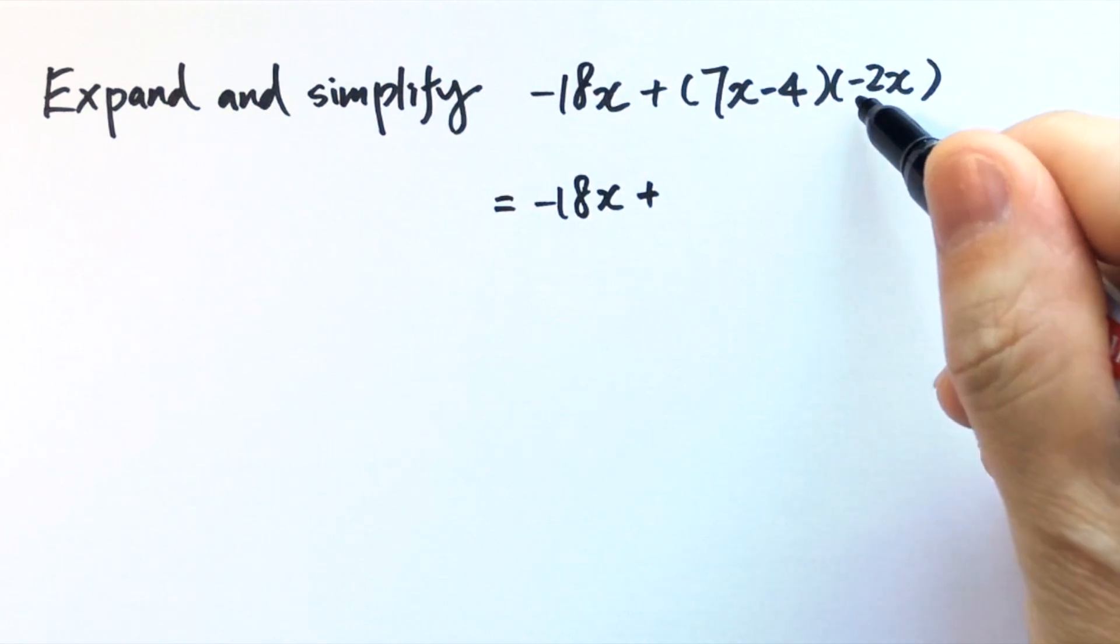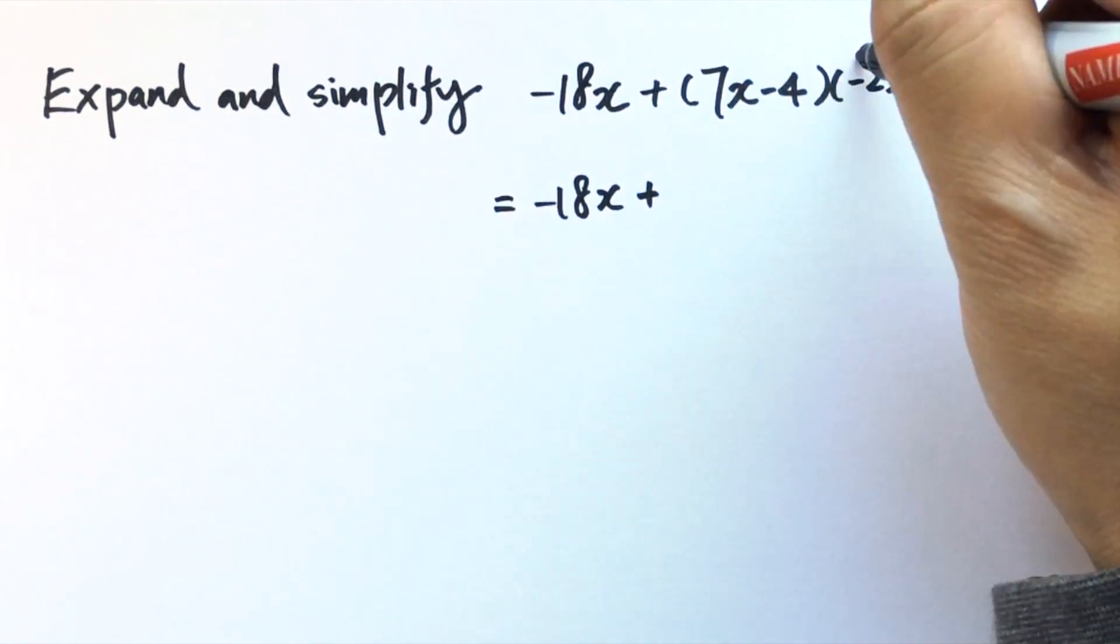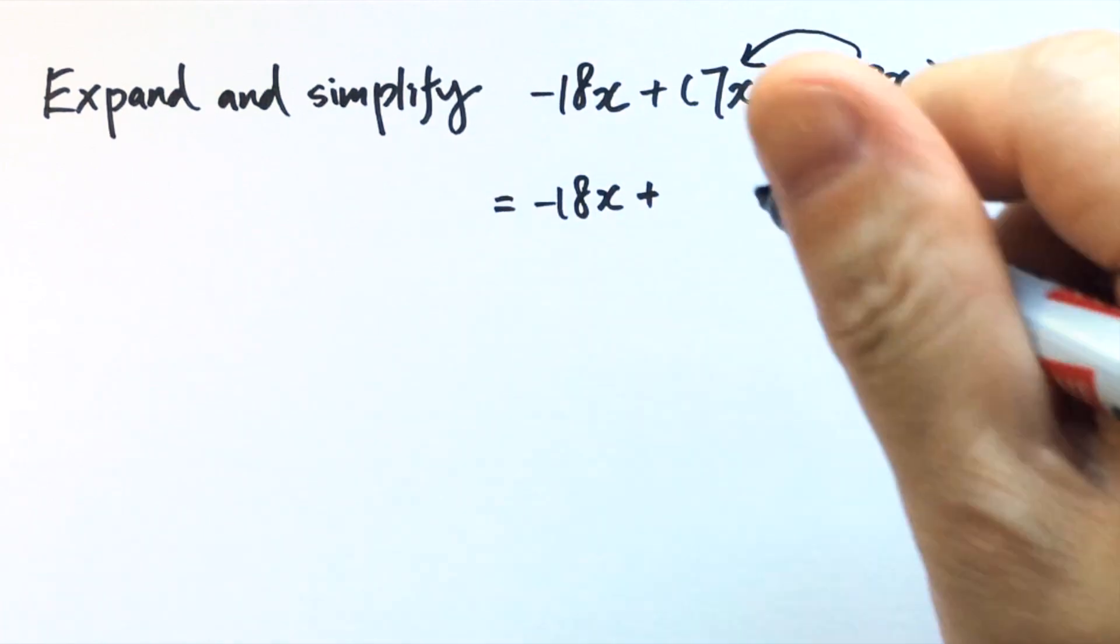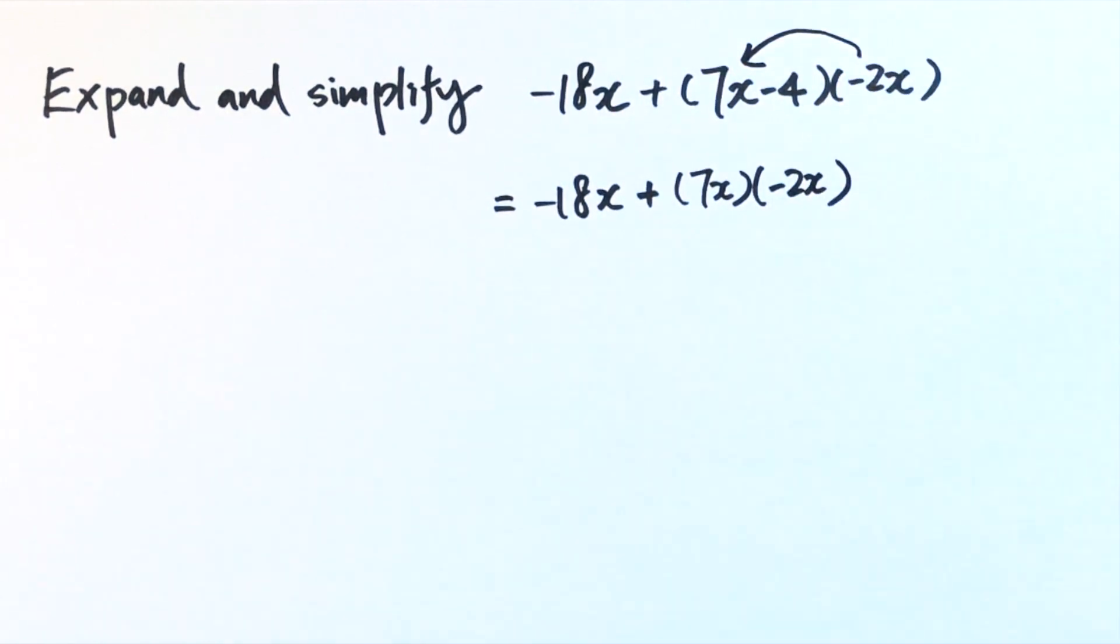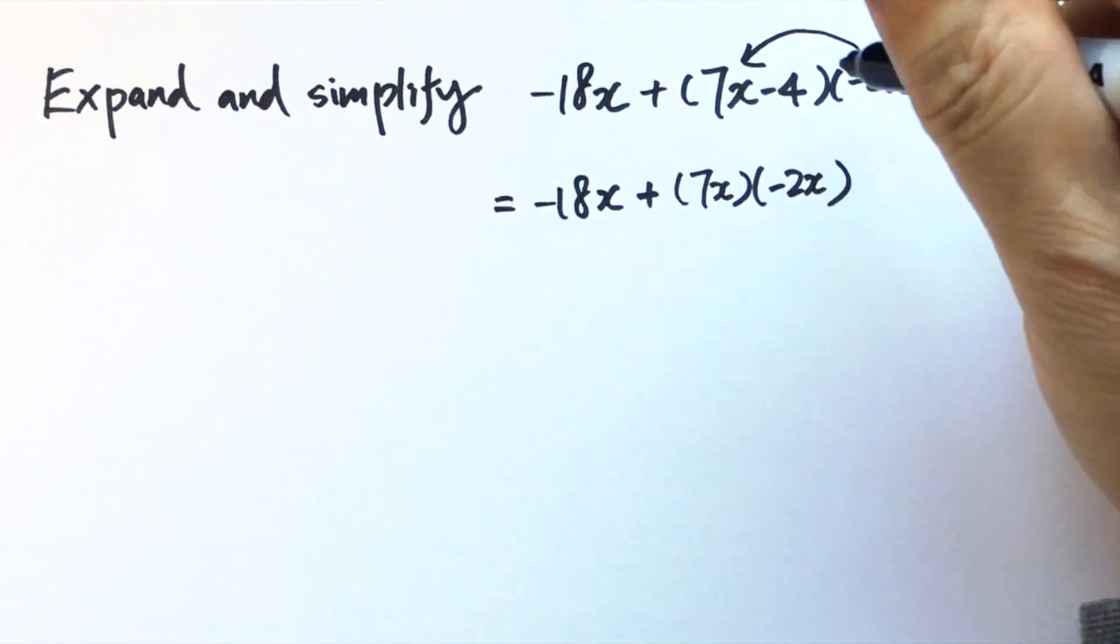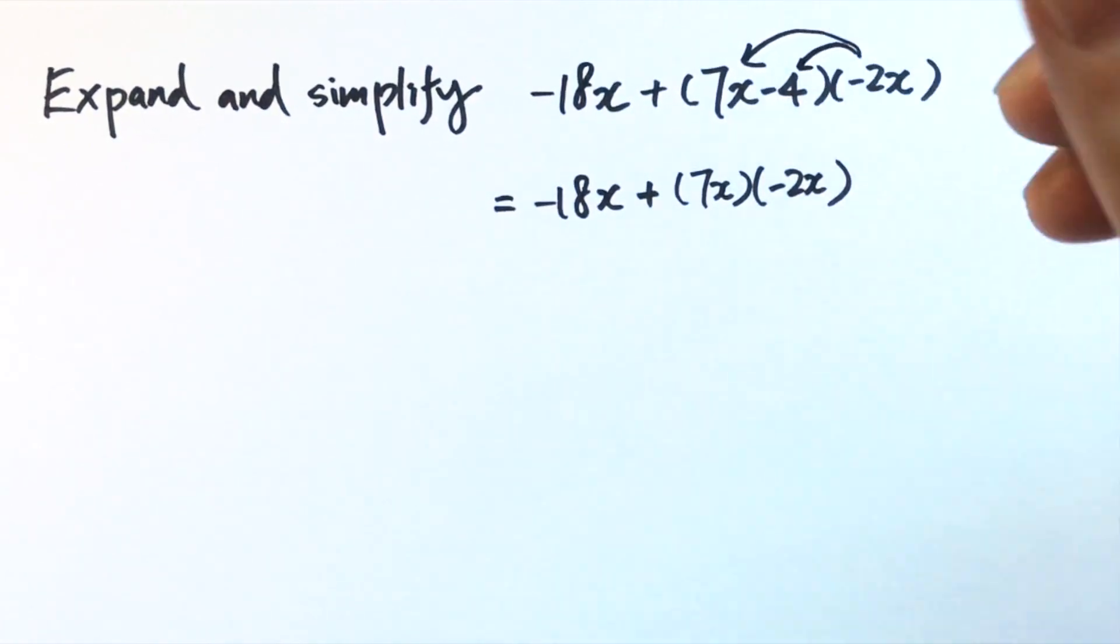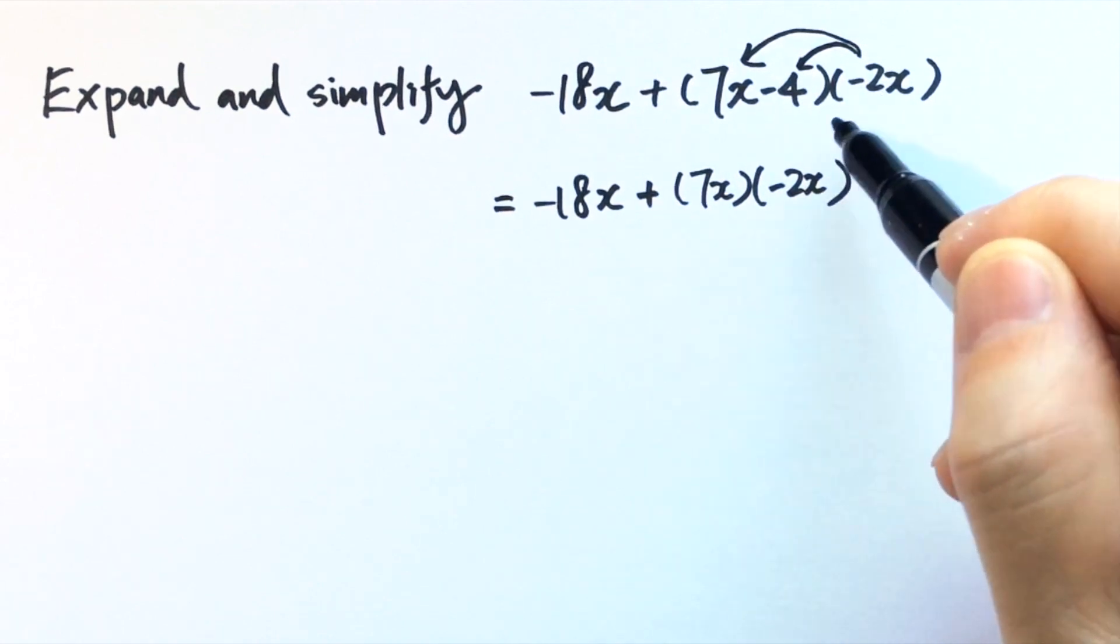We can apply the distributive law again. This is multiplied by negative 2x. 7x times negative 2x here, and then we have negative 4 times negative 2x.